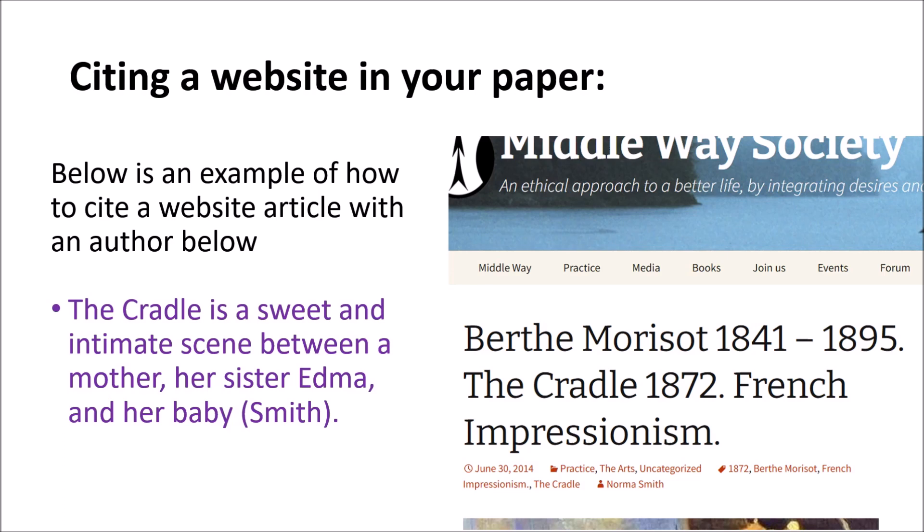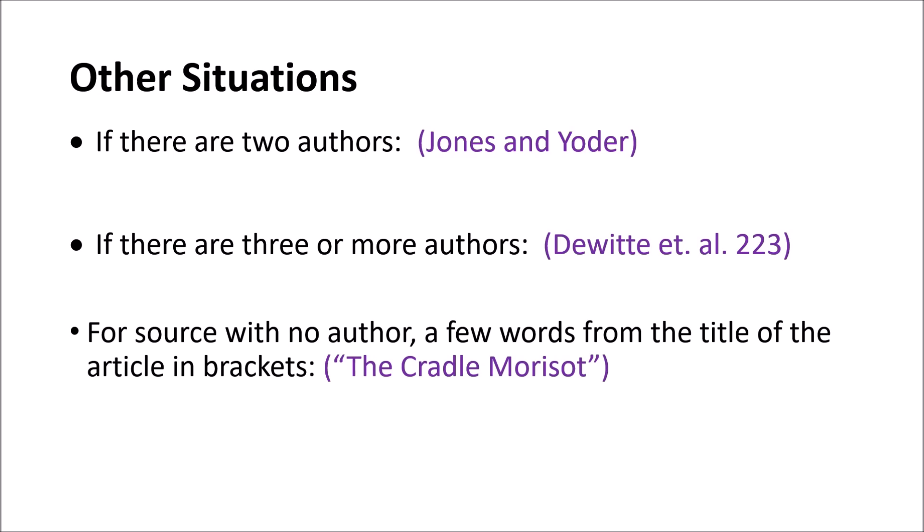Sometimes you might have a source with more than one author. If there are two authors, you put both last names in the in-text citation with 'and' in between them. So if the authors are Jones and Yoder, that's what you put at the end of the sentence.